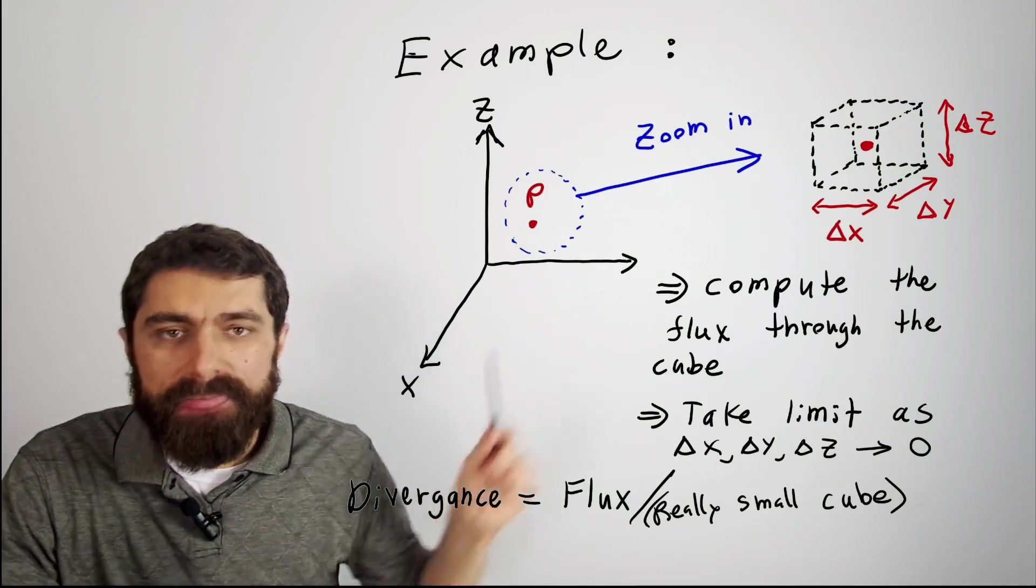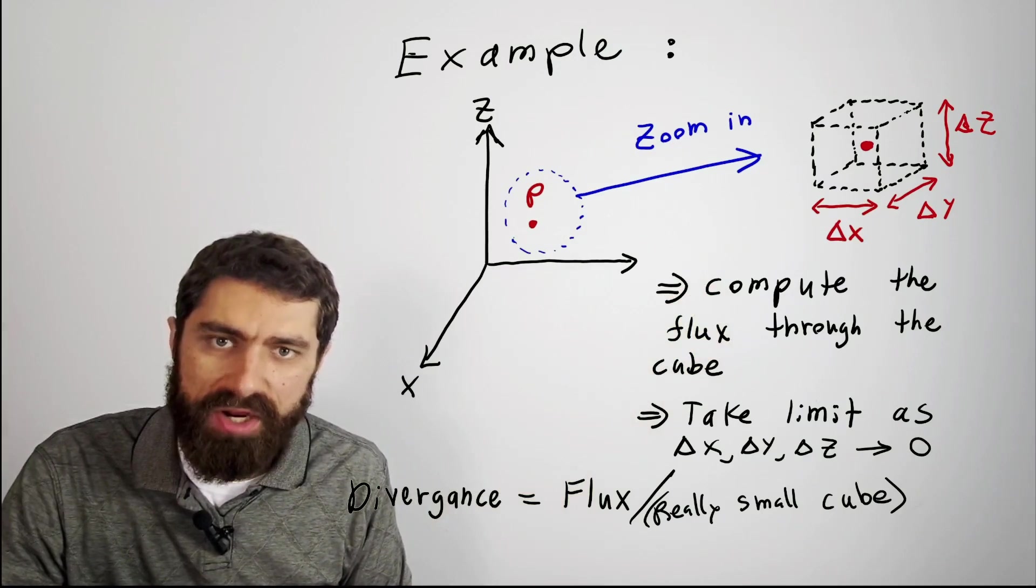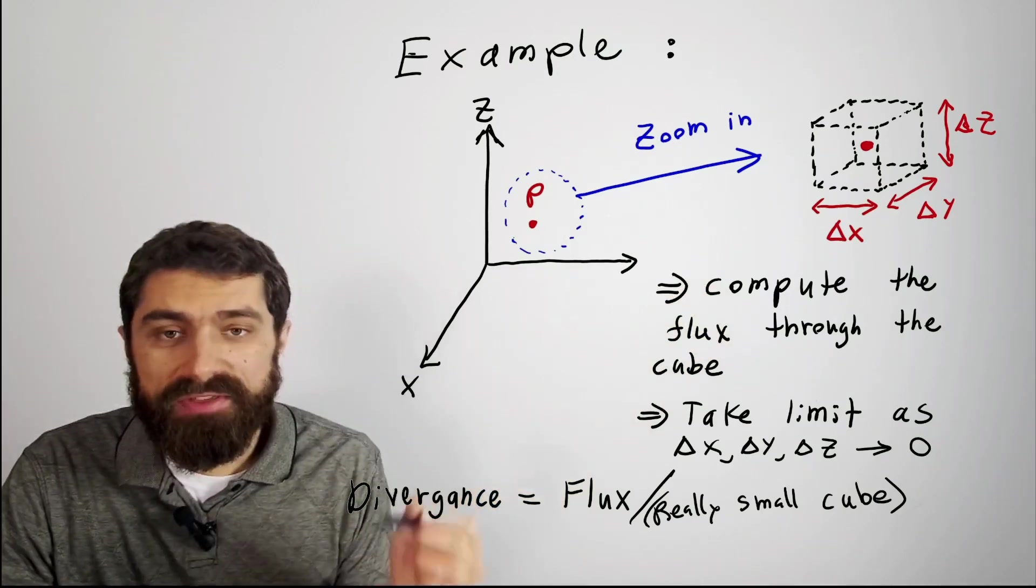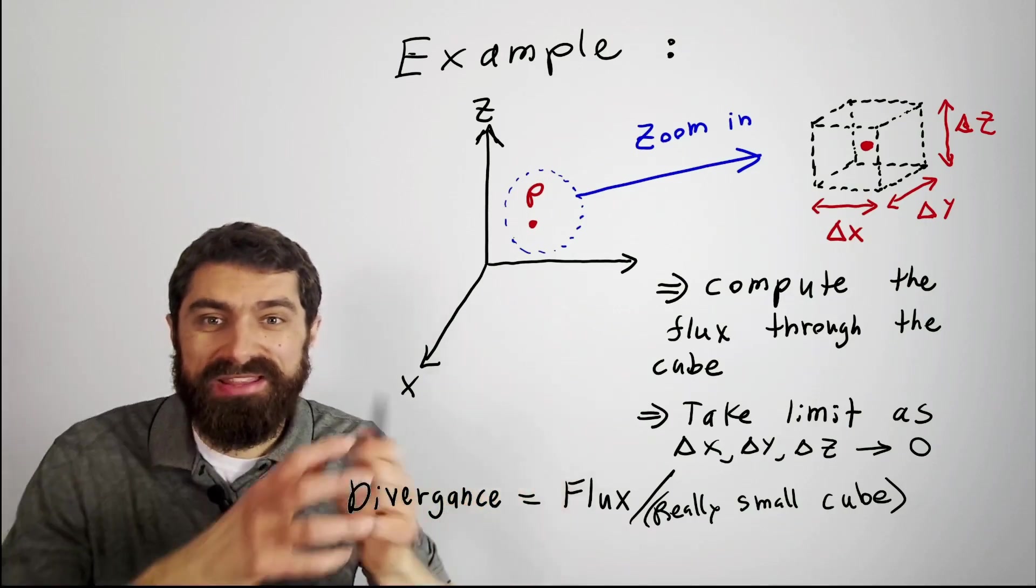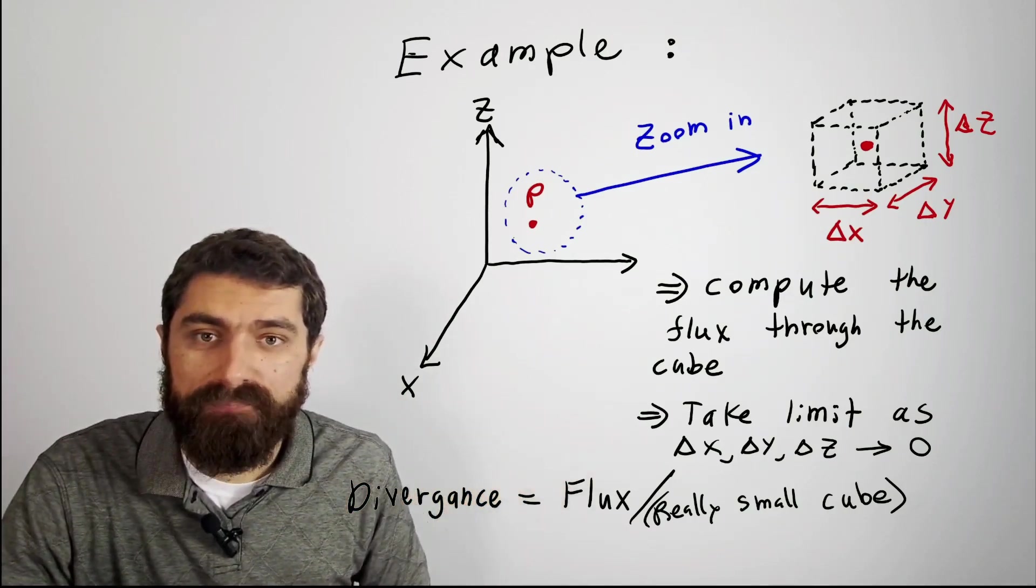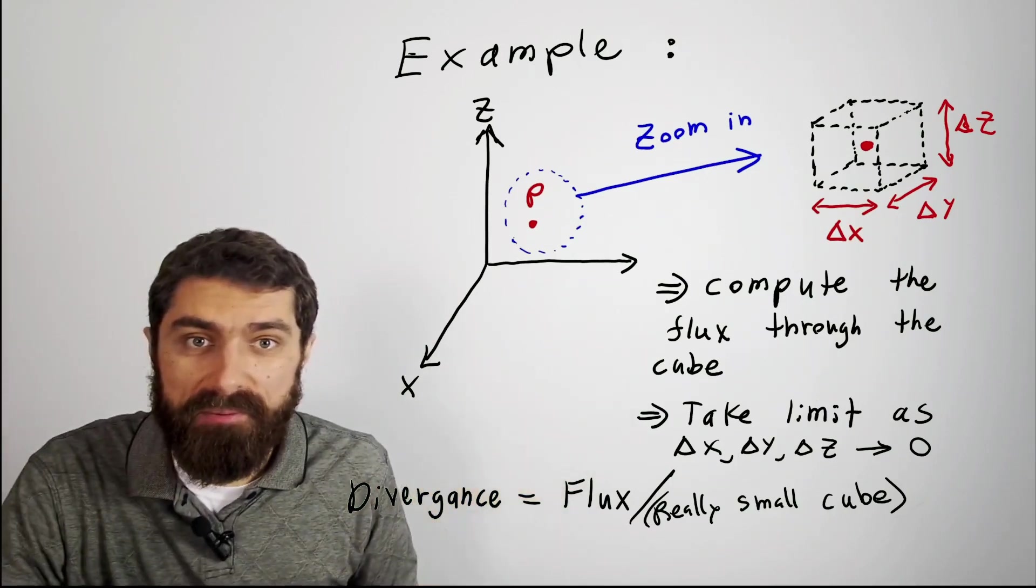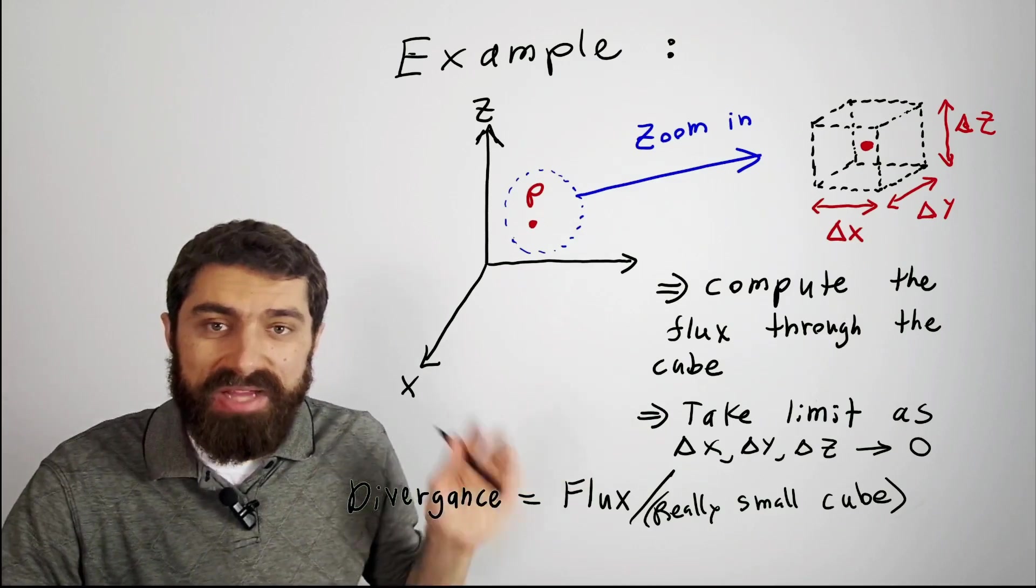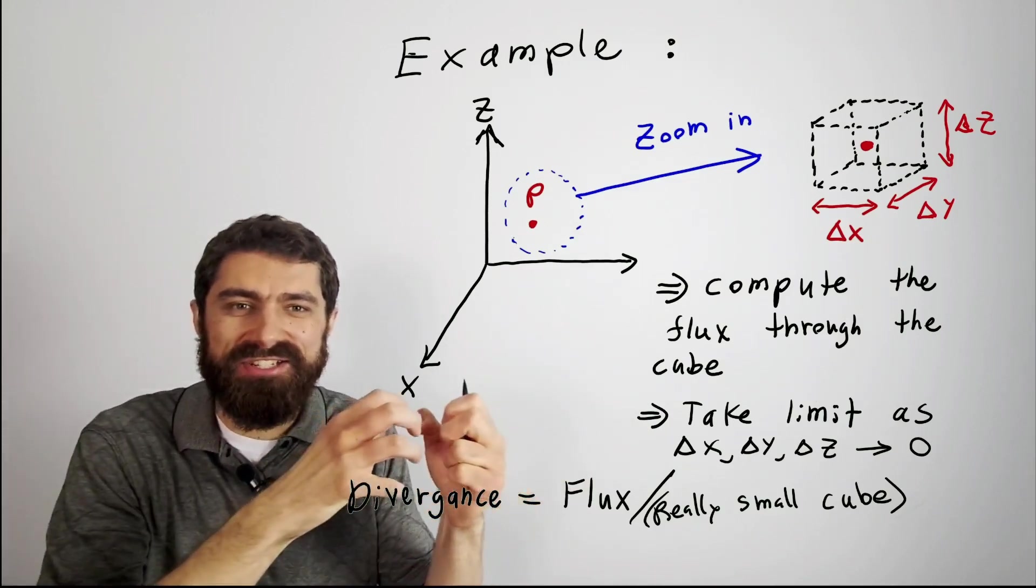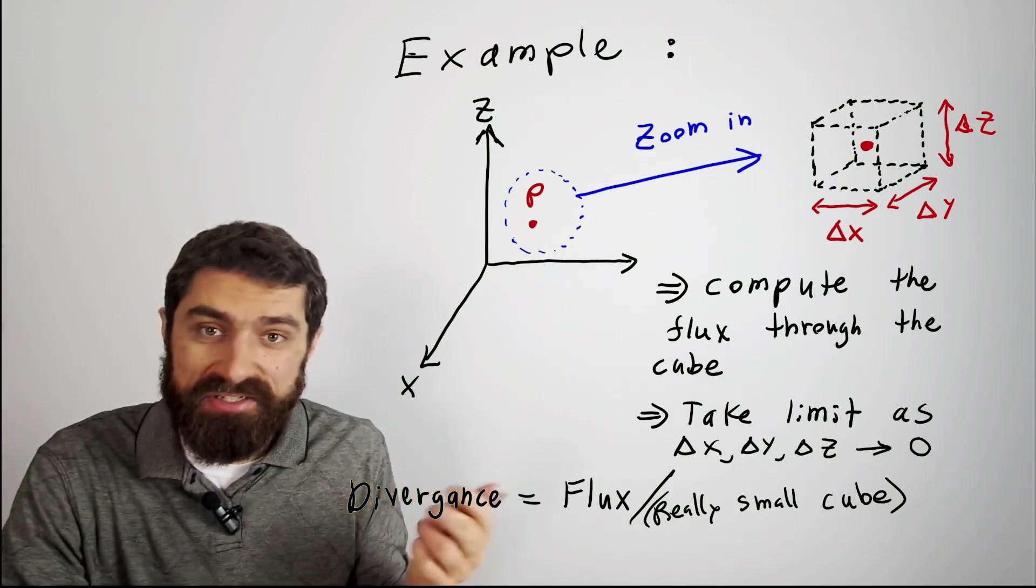Basically what you do is you calculate the flow, or the integral of E dot dS, through each one of the sides of the cube, and then add them all together, calculating the total electric flux going through the surface. Then what you could do is take the limit as delta x, delta y, and delta z go to zero. So basically what you've calculated is the flux going out of that little tiny point or little tiny cube.